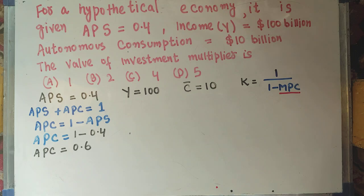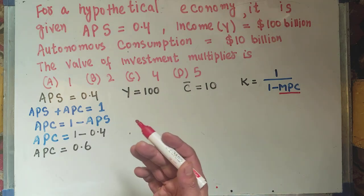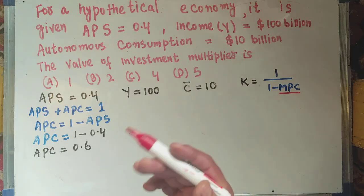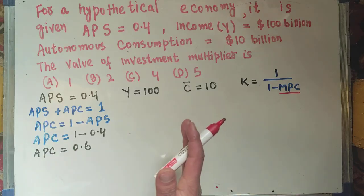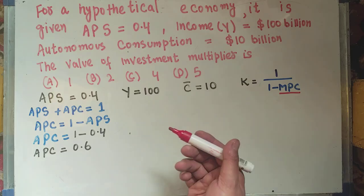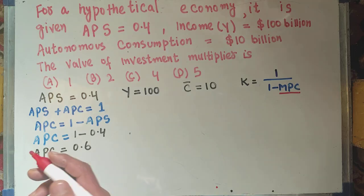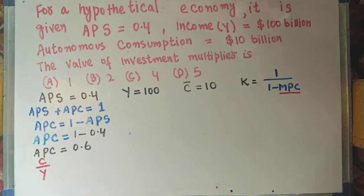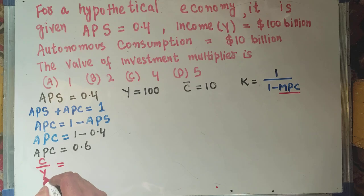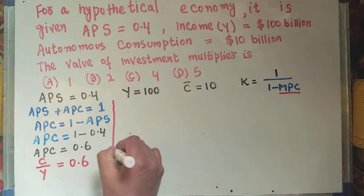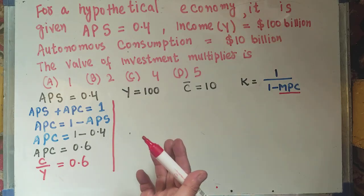Average propensity to consume shows us the proportion of income that is spent on goods and services. The value of APC is equal to total consumption divided by total income — that is, APC = C/Y. This proportion equals 0.6, so C/Y = 0.6.